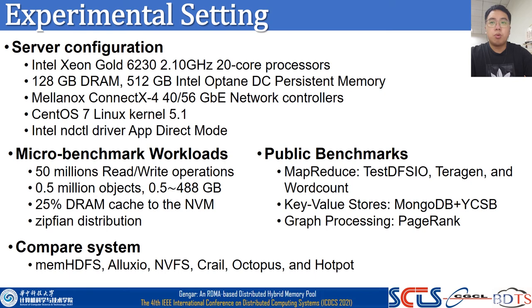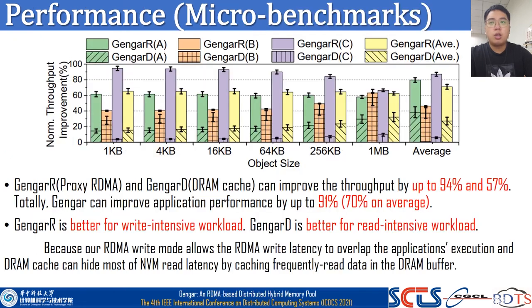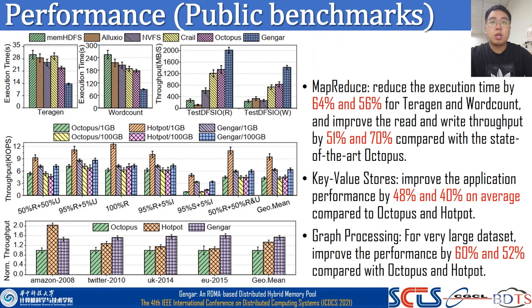Here are the experiment settings. We use MicroBenchmark and public benchmarks to test Gengar and compare with state-of-the-art systems. Gengar-RI and Gengar-D can improve the throughput of MicroBenchmarks by up to 94% and 57% respectively. Overall, Gengar can improve application performance by up to 91% and 60% on average. Gengar-RI is better for write-intensive workloads, and Gengar-DE is better for read-intensive workloads. In MapReduce, Gengar reduced execution time by 64% and 56% on TeraSort and WordCount, and improved read and write throughput by 51% and 60% compared with state-of-the-art Octopus.